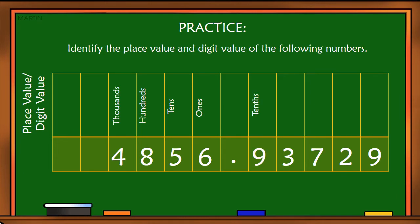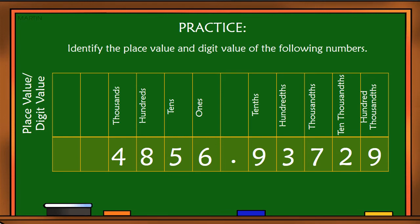Let's move on to the decimal numbers. Nine tenths, three hundredths, seven thousandths, two ten thousandths, and nine hundred thousandths.